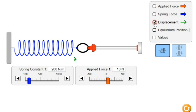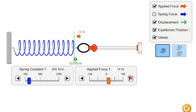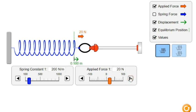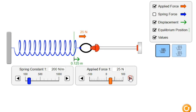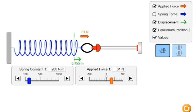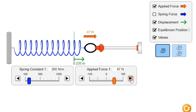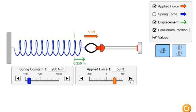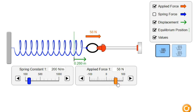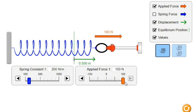For example, applying a force of 10 N only causes a displacement of 0.05 meters or 5 centimeters. And on 100 N force the displacement is 0.5 meter or 50 centimeters.